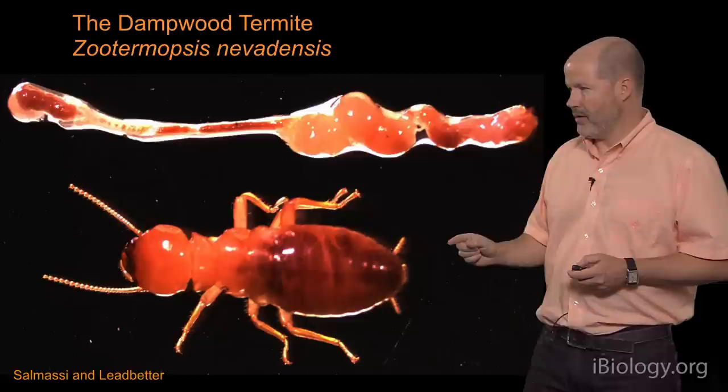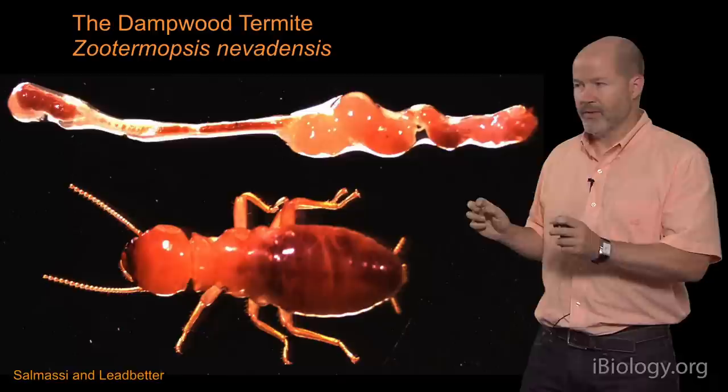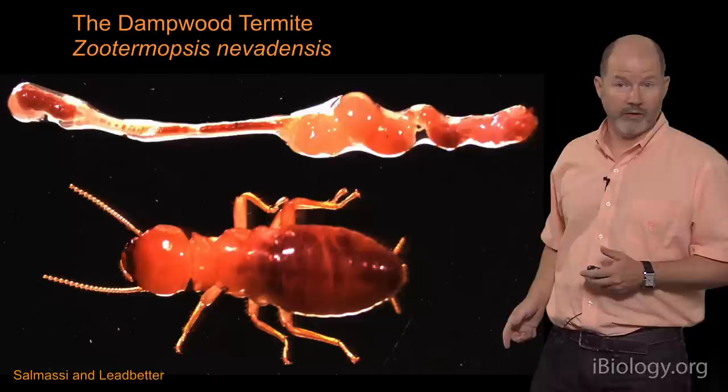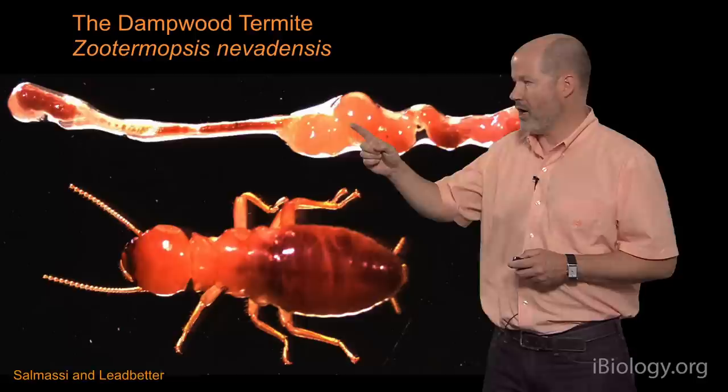This is the termite we study in my laboratory: the dampwood termite, Zootermopsis nevodensis, about a centimeter in length — one of the larger termites you'll find on Earth. This is what we call a worker, and from another specimen I've extracted a hindgut tract. What you observe is a long tubular region somewhat analogous to our small intestine, and then the hindgut paunch, which is somewhat analogous to our large intestine.